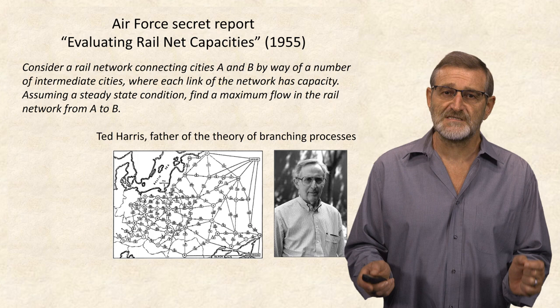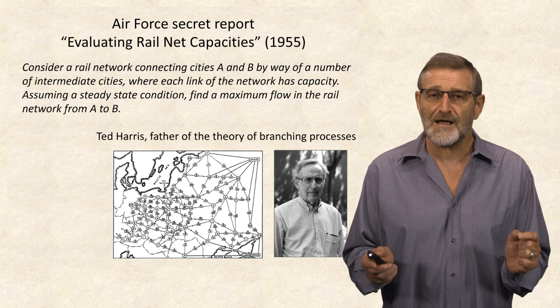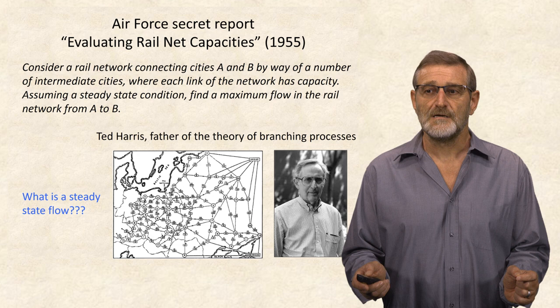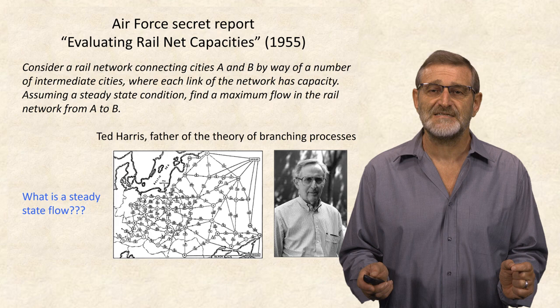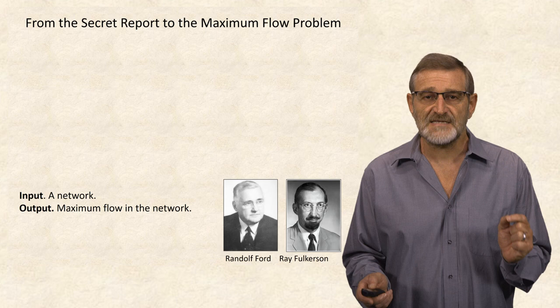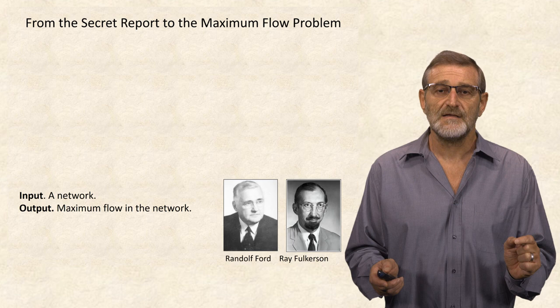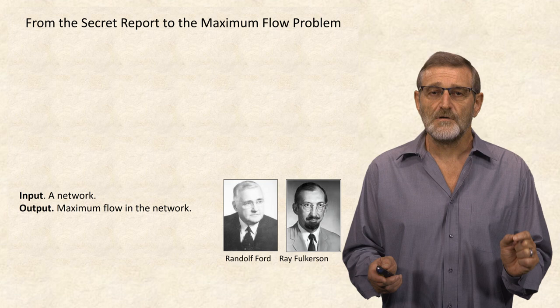He thus combined forces with the mathematician Ted Harris, who realized that instead of searching for interdiction — minimizing the number of segments to bomb — it makes sense to solve a completely different problem: find a maximum steady-state flow in the rail network from a station A to a station B. This secret report, co-written by a general and a mathematician, still did not have a rigorous problem formulation. They shared their report with young mathematicians Randall Ford and Ray Falkerson, who had just finished their graduate studies, and Ford and Falkerson came up with this brilliant problem formulation that launched the entire field of flows and networks.